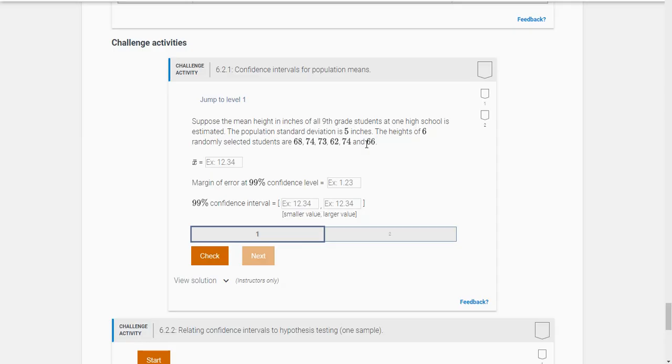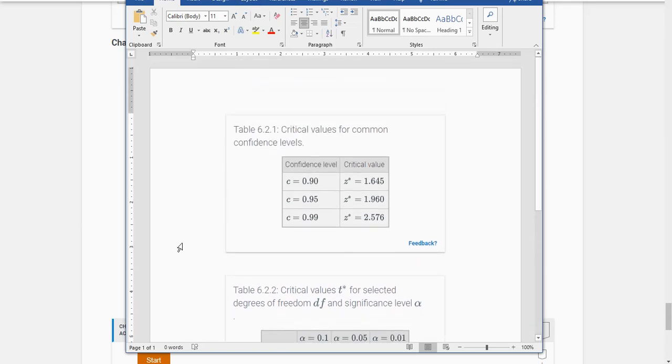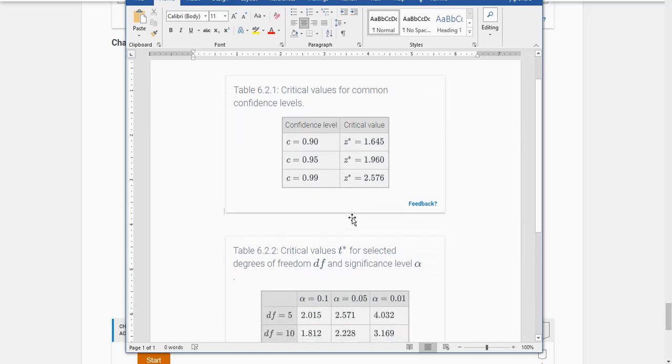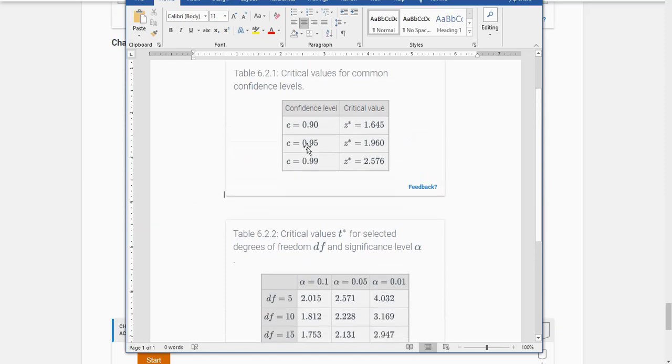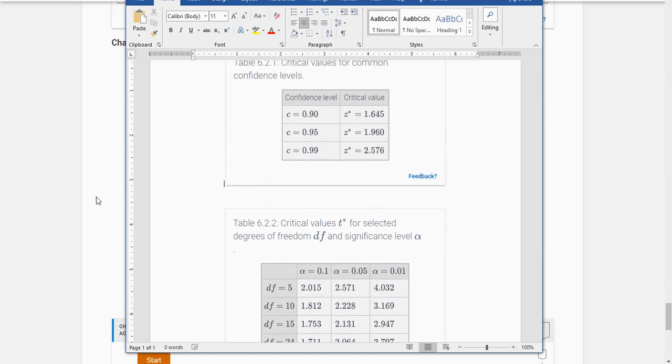Hi class, in this video I want to walk you through challenge exercise 6.2.1. We're going to be given some data and we're going to construct confidence intervals. When you scroll up in your textbook, you'll notice these two tables of critical values: table 6.2.1 with z critical values for common confidence levels, and table 6.2.2 with critical value t stars for selected degrees of freedom and significance levels alpha. You're going to need these two tables to answer this challenge question.